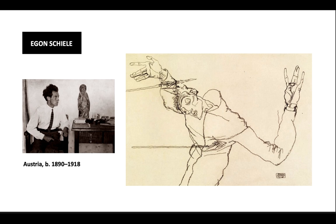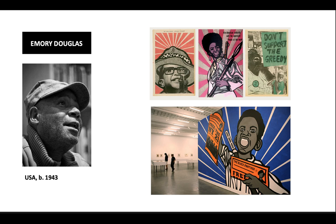Emory Douglas is an American graphic artist. He was a member of the Black Panther Party from 1967 until the party disbanded in the 1980s. As a revolutionary artist and the minister of culture for the Black Panther Party, Douglas created iconography to represent black American oppression. His use of line and color, his revolutionary artwork helped to educate repressed and suppressed communities of the time.